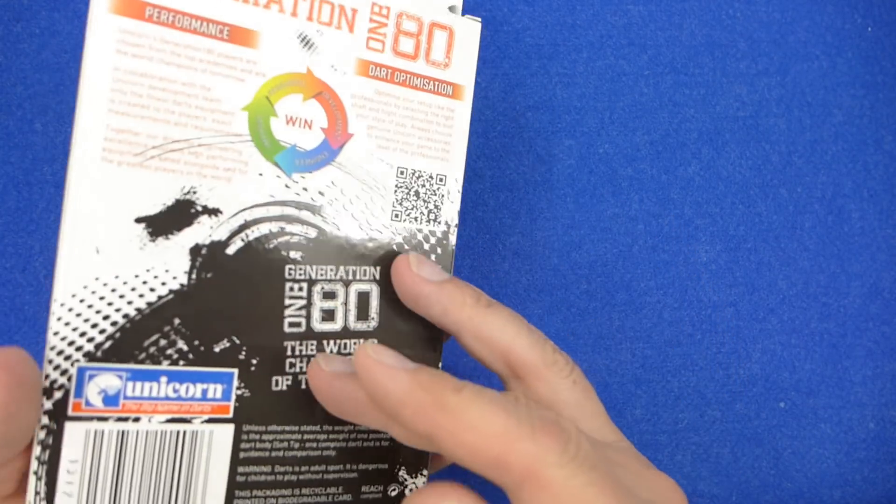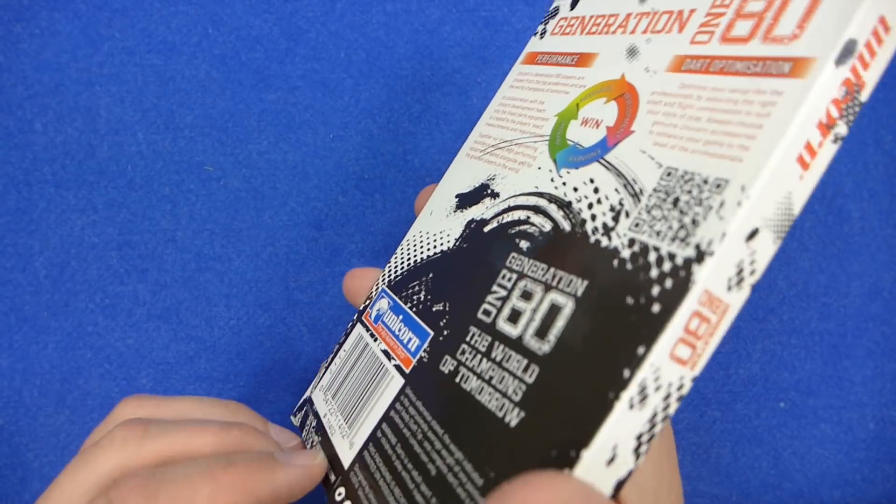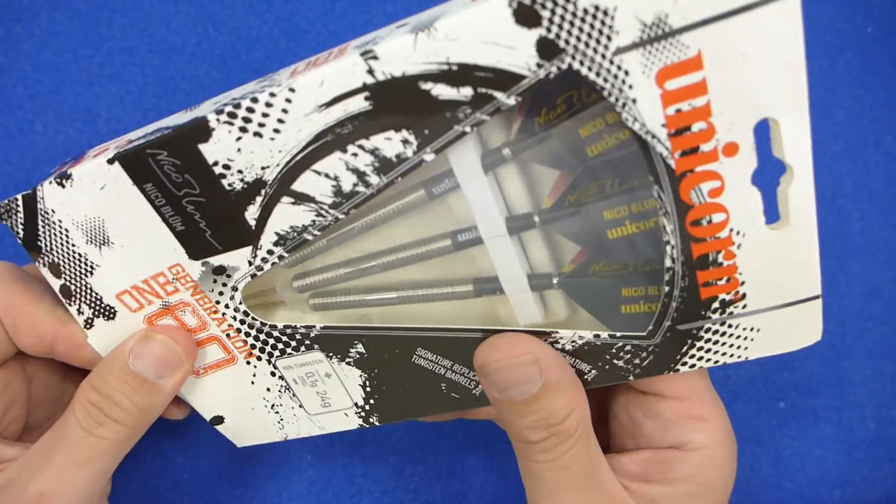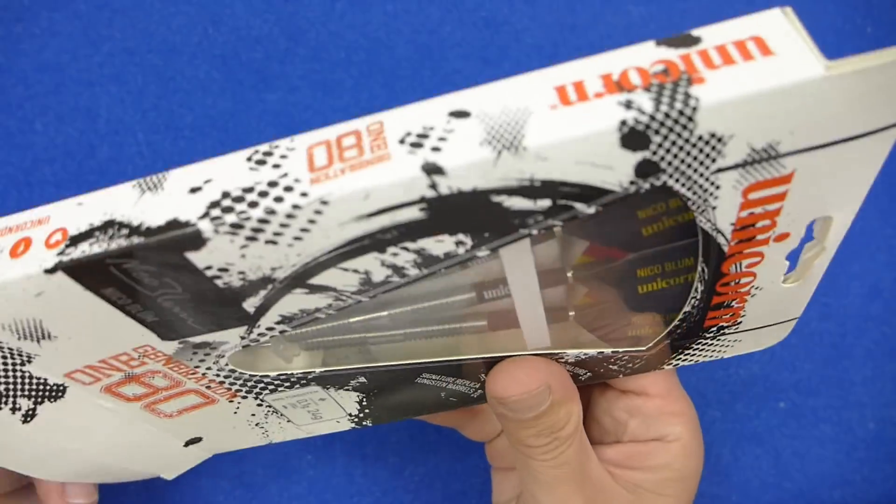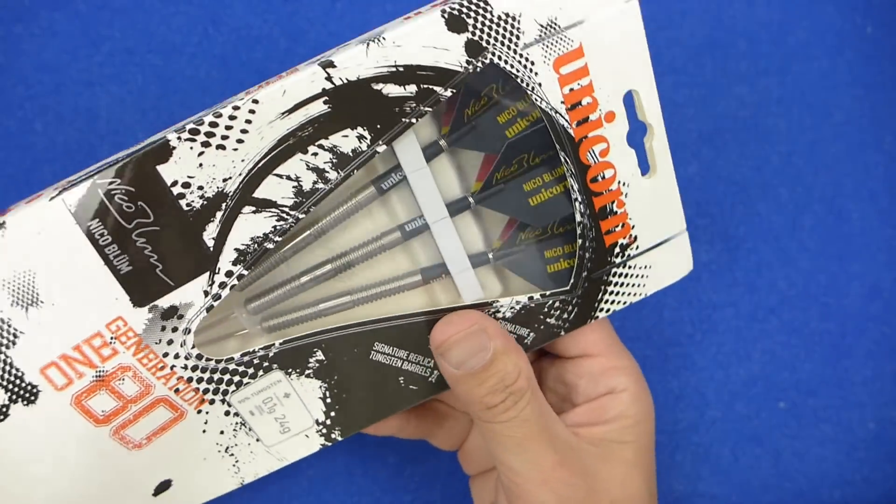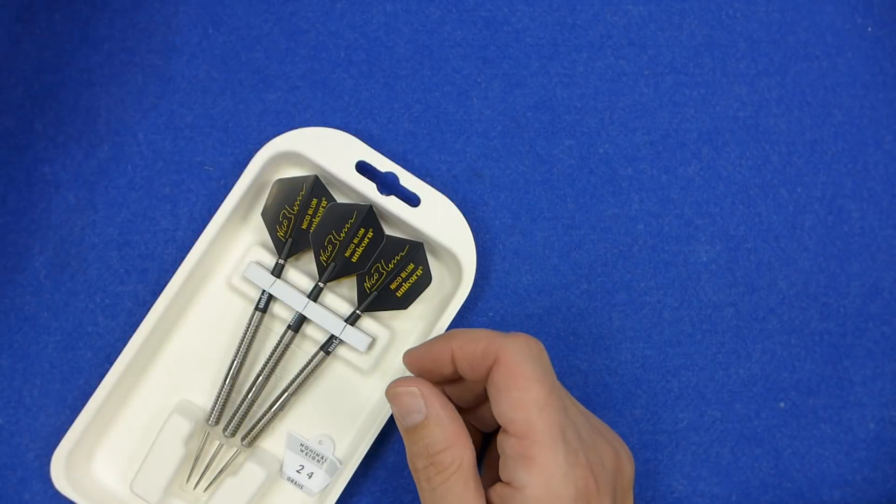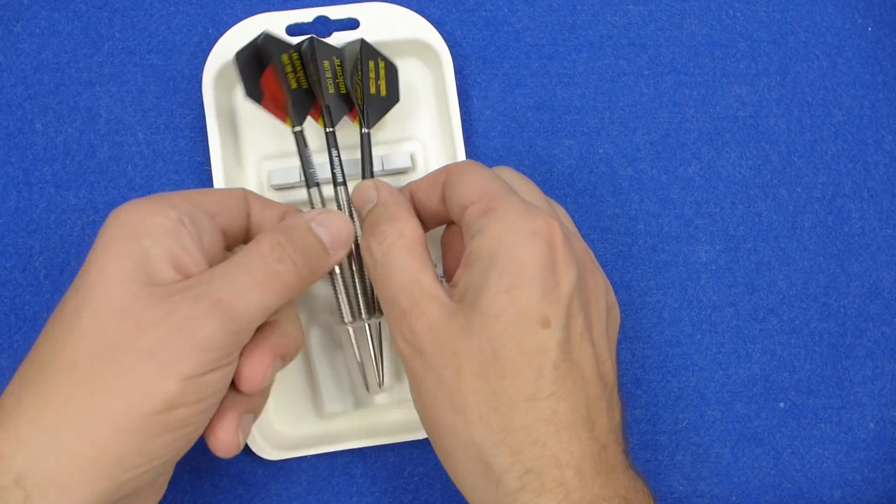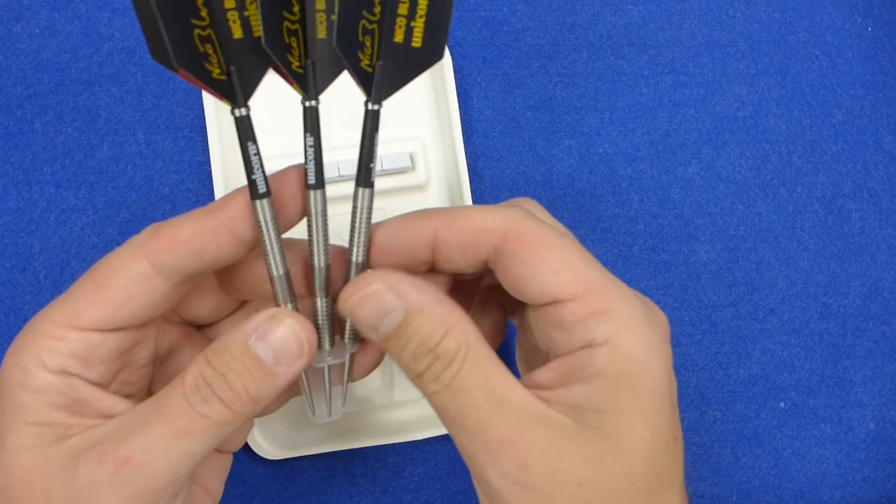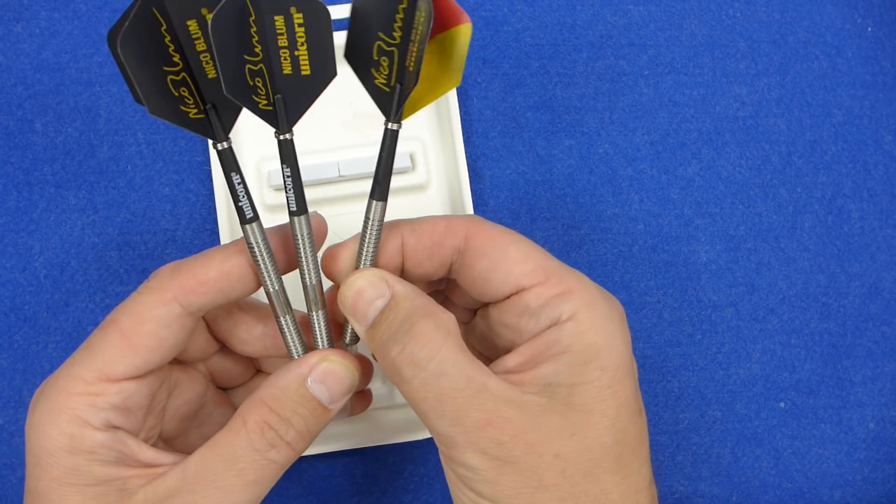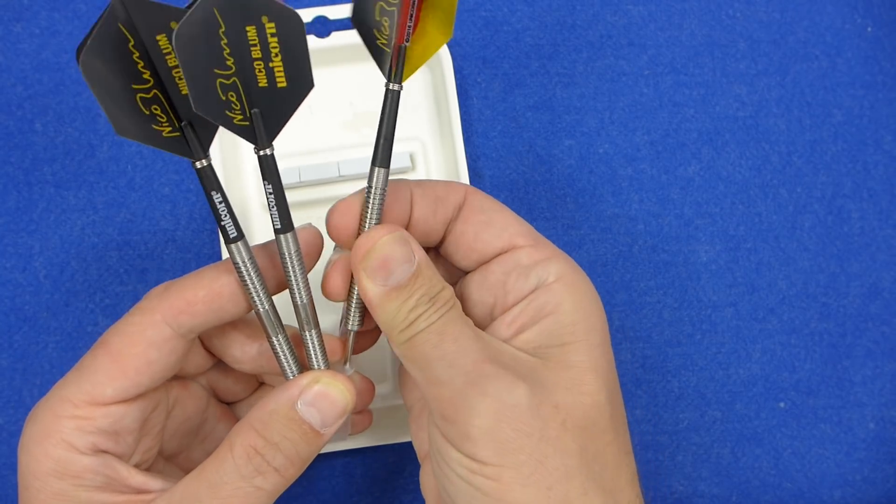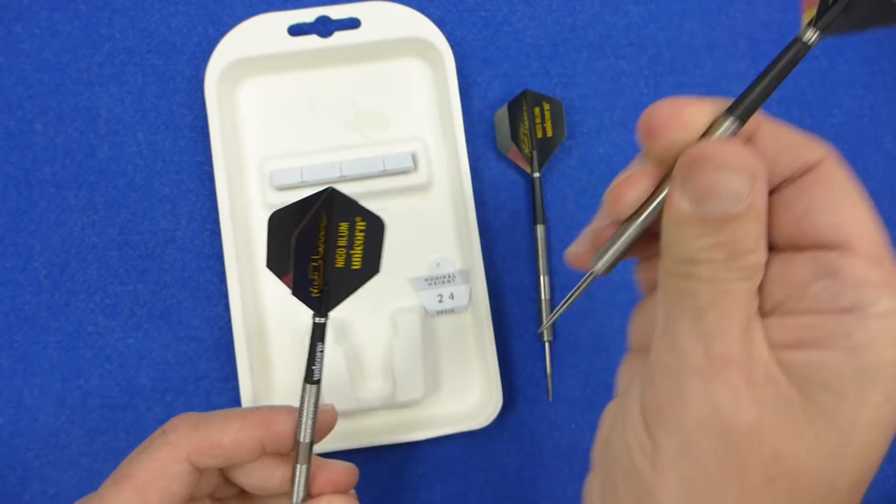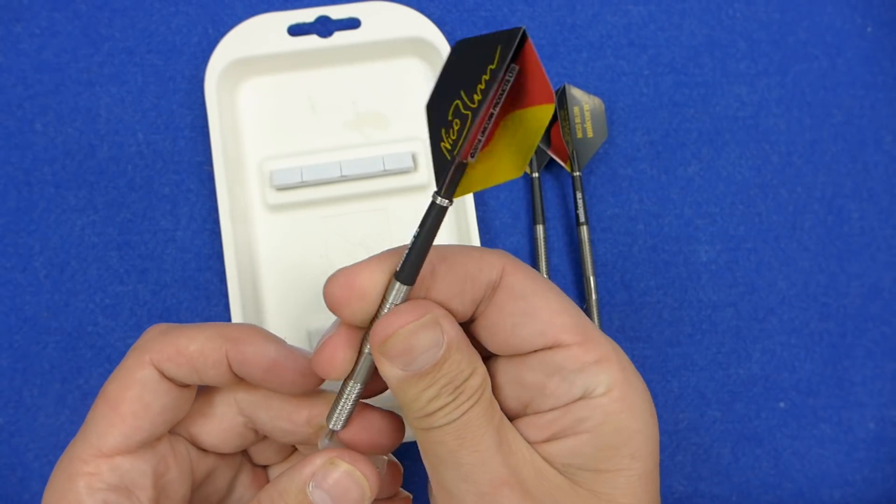The darts come in this new Generation 180 packaging, a slim cardboard box with a slide-out cardboard tray inside. Inside there's the darts in a triangular point protector, some short gripper stems, and the Nico Blum standard shape signature flights.